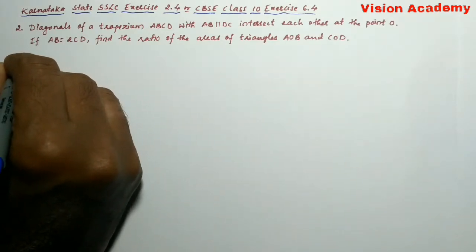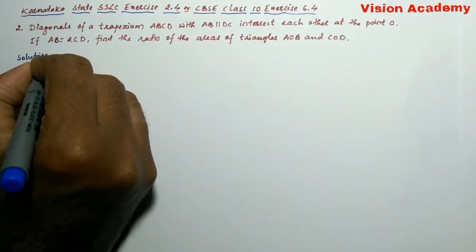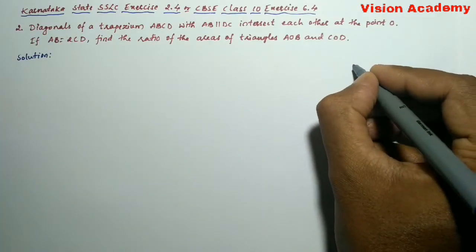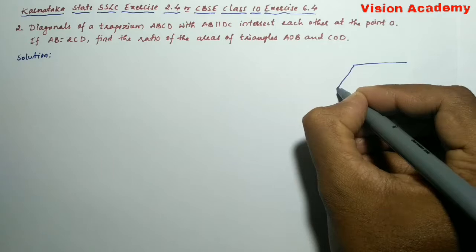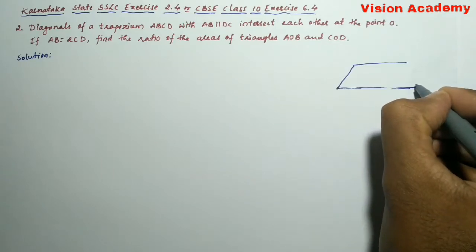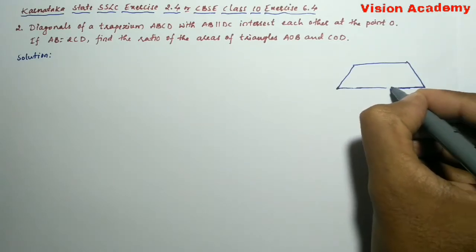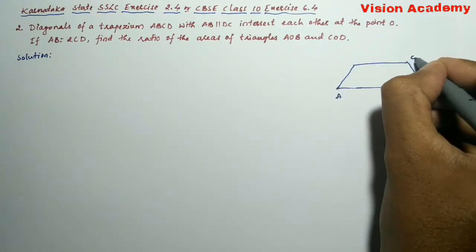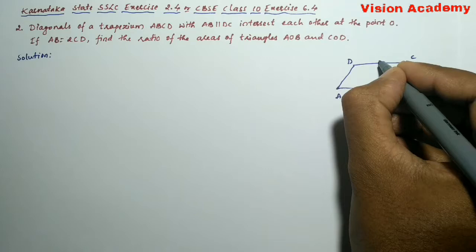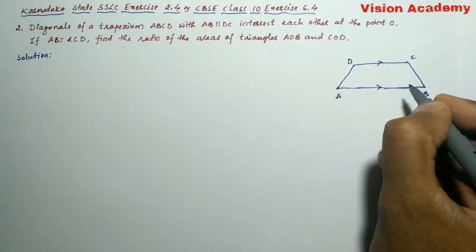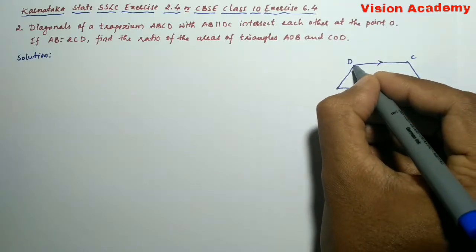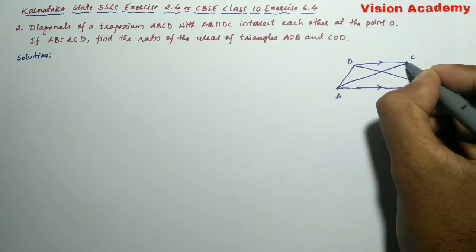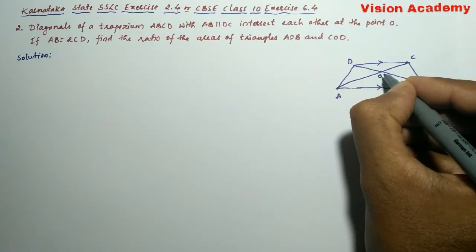Now, let us find the solution for the given problem. Here, let us draw a trapezium ABCD where DC is parallel to AB and let us draw the diagonals BD and AC intersecting at O.